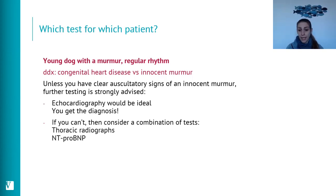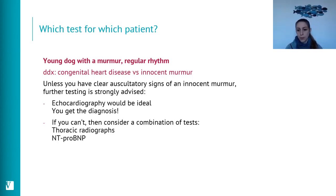If echocardiography is not immediately accessible, thoracic radiographs — and a combination of radiographs and NT-proBNP — can help tailor the next steps and management options for a puppy with a murmur, particularly if you are looking for evidence of congenital heart disease.